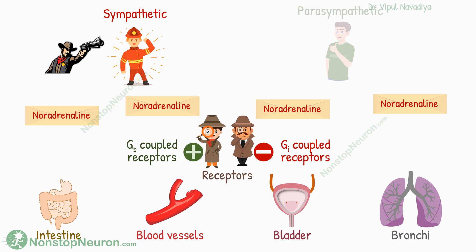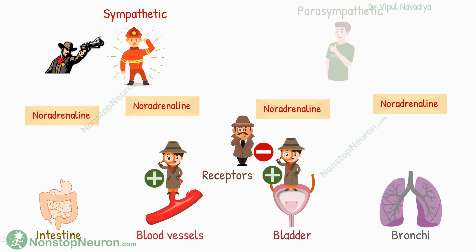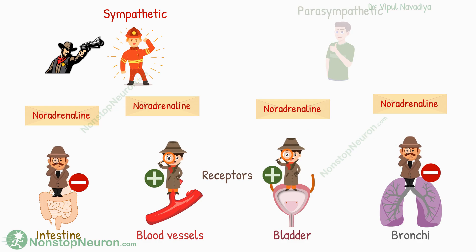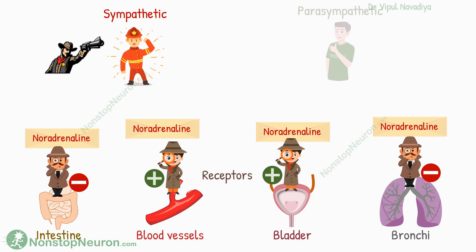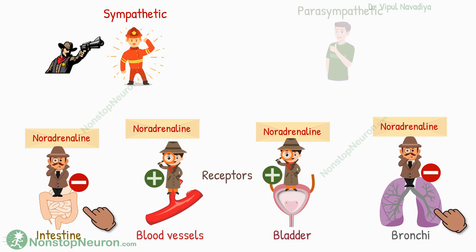These receptors get distributed based on what the organ should do in response to a particular message. The motivating receptors go to those organs where smooth muscles should contract — for example, blood vessels and the trigone in the urinary bladder. And the demotivating receptors go to where smooth muscles should relax — for example, intestine and bronchial smooth muscles. So collectively, in an emergency, the sympathetic neurons send the same message, noradrenaline, to all smooth muscles. The receptor then adds clarity: motivating receptors cause contraction, and muscles where demotivating receptors are present relax. This is how receptors add clarity to the message.